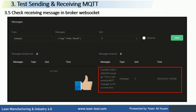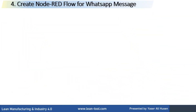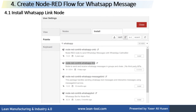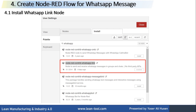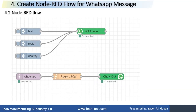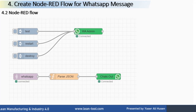Next, go to the additional steps. The next step is to create a Node-RED flow for sending a WhatsApp message. First, install the WhatsApp Link Node. Click Manage Palette, go to the Install tab, find the WhatsApp Link Node, and click Install.